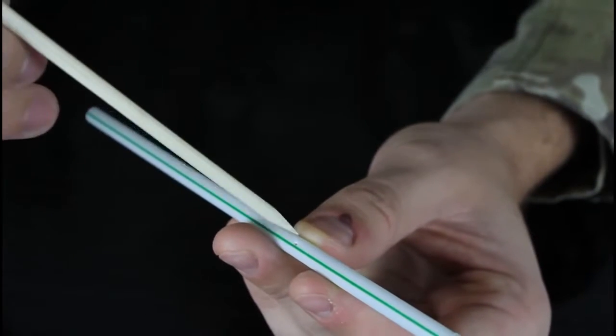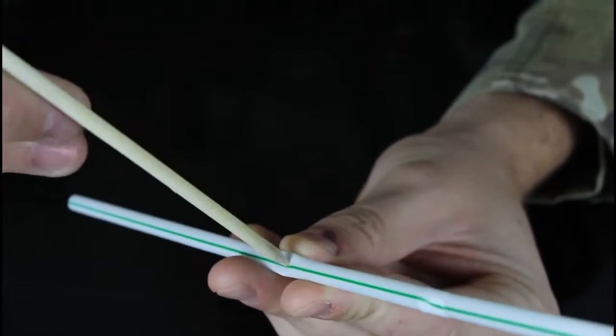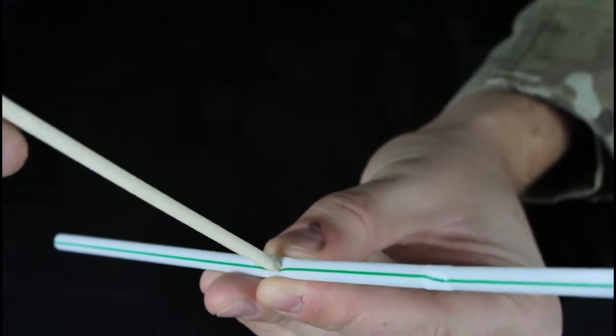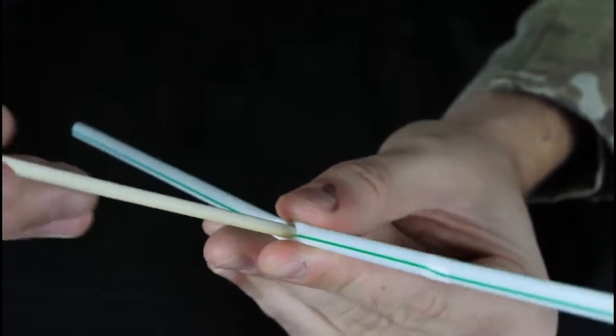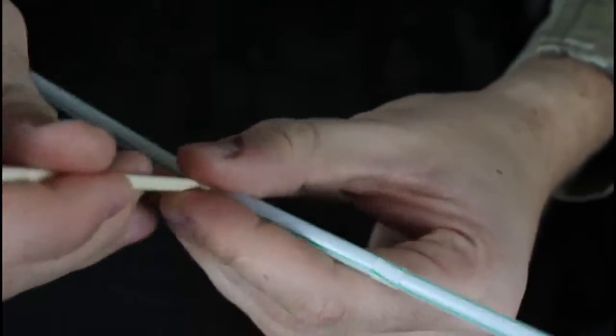First thing we're gonna do is find the middle in the straw. You see how that's pointy, like sharp? We're just gonna make a hole just like that, kinda twist it and turn and put it through, probably like halfway.